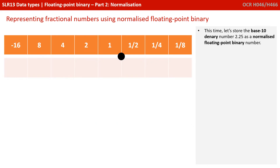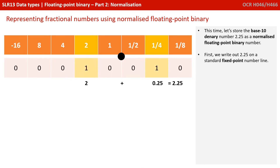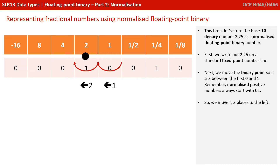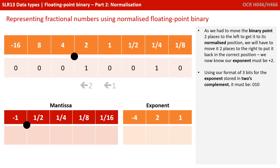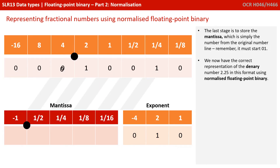This time let's store the denary number 2.25 as a normalised floating-point binary number. We write out 2.25: a 1 in the 2 column and a 1 in the quarter column. Next, we move the binary point so it sits between the first 0 and 1 — normalised positive numbers start 0, 1 — so we've moved it two places to the left. As we moved the binary point two places to the left, we'll have to move it two places to the right to put it back, so our exponent must be positive 2. In three-bit two's complement, positive 2 is 0, 1, 0. The last stage is to store the mantissa, remembering it must start 0, 1.